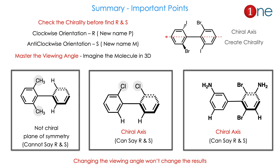Let us summarize the points we have seen so far. First, you have to check the chirality before finding R and S. The chiral axis creates the chirality in biphenyl compound. When you find the orientation: clockwise means R, or the new name P; anti-clockwise means S, and the new name is M. While finding R and S, you have to master the viewing angle and imagine the molecule in 3D. If it has the same substituent, it is not chiral. If it has different substituents in the perpendicular plane, it is chiral. The one important fact: changing the viewing angle won't change the results.